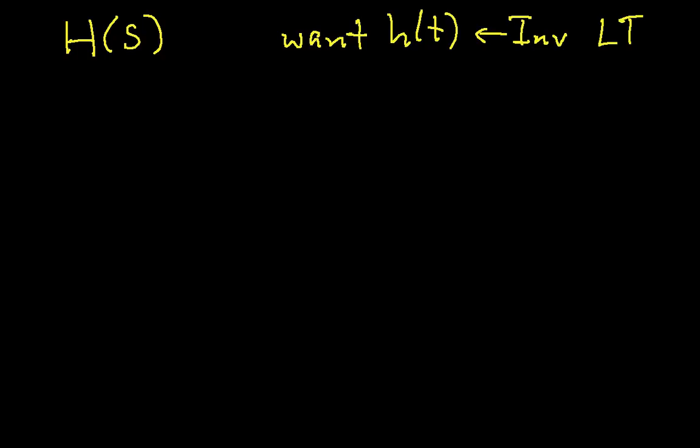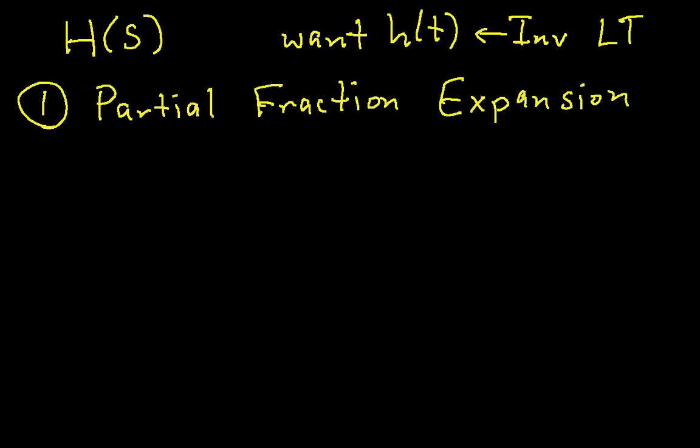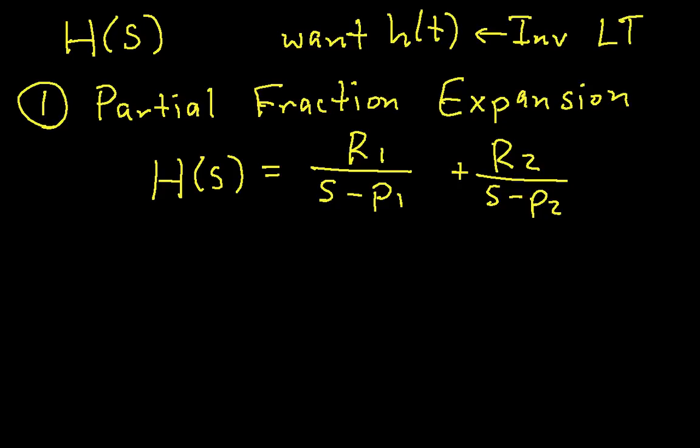So, in order to take the inverse Laplace transform of H(s), the first thing we will have to do is perform a partial fraction expansion. And this will get H(s) into the form of something that looks like R1 over s minus P1 plus R2 over s minus P2. And the idea is, in the partial fraction expansion, we will compute the values of R1, R2, P1, and P2.